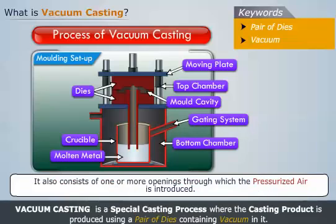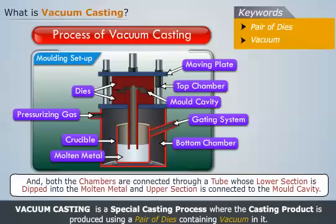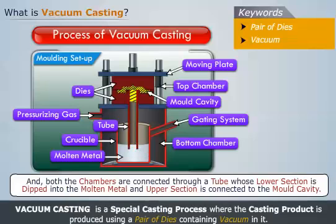It also consists of one or more openings through which the pressurized air is introduced, and both the chambers are connected through a tube whose lower section is dipped into the molten metal and the upper section is connected to the mold cavity.